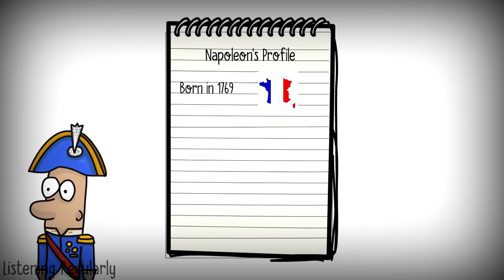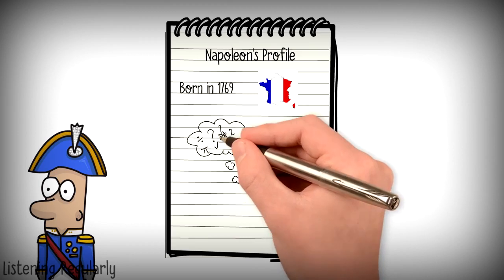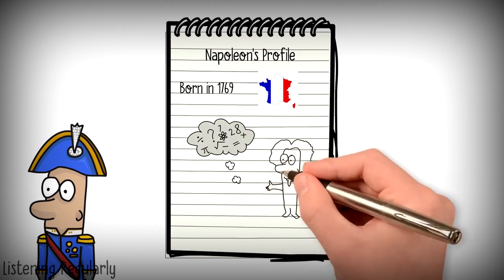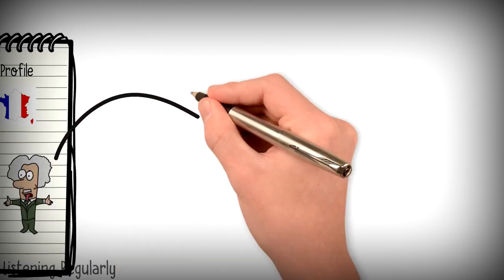Napoleon wasn't a very good student in most of his classes, but he excelled in mathematics and military science. When he was 16 years old, he joined the French army.